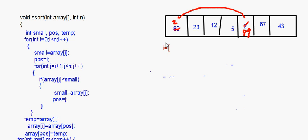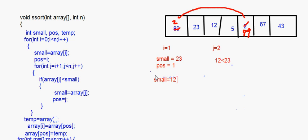Now i will be equal to 1 and j will be equal to 2. Small is equal to array[i], so small equals 23 and pos equals 1. We start with j equal to 2 — array[2] is 12. 12 is less than 23, so small becomes 12 and pos becomes 2. Then j becomes 3, which is 5. 5 is less than 12, so small becomes equal to 5 and pos becomes equal to 3.